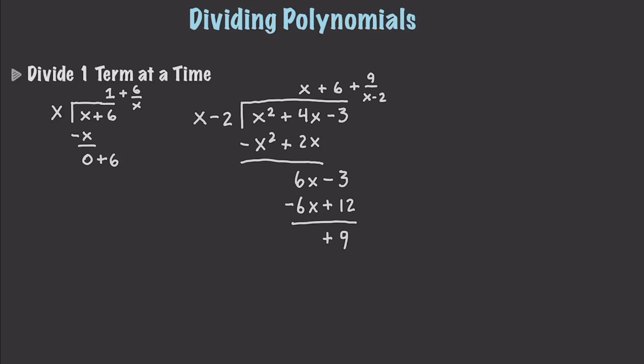We can actually verify our results here. We're going to have x minus 2 times x plus 6 plus 9. If we multiply all of these out, we end up getting x squared, as I showed you how to multiply these polynomials. And then we'll have 6x minus 2x minus 12 plus 9. And if we simplify this, we get x squared plus 4x minus 3. And that is exactly the same as what we have right there. So, there's a couple examples of how we can divide polynomials.